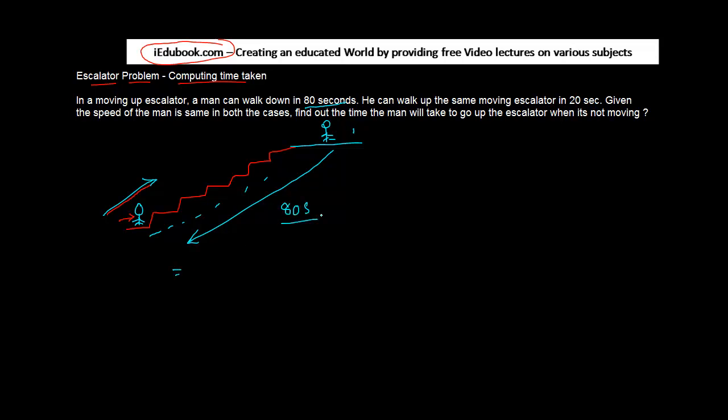He can walk up the same moving escalator in 20 seconds. If he starts moving up, then he can do that in 20 seconds. Given the speed of the man is same in both cases, find out the time the man will take to go up the escalator when it is not moving.